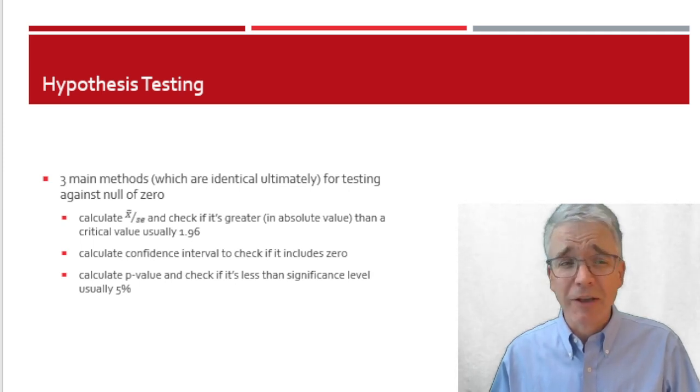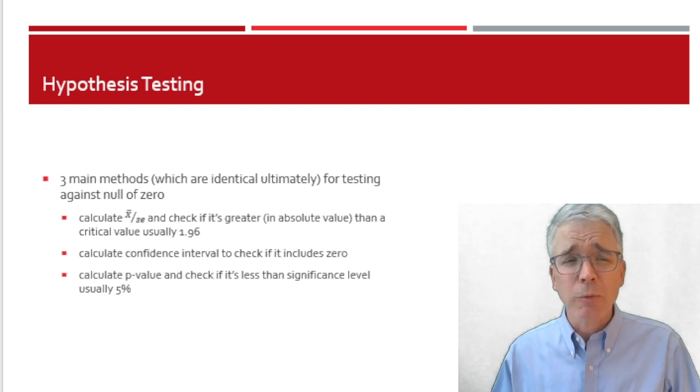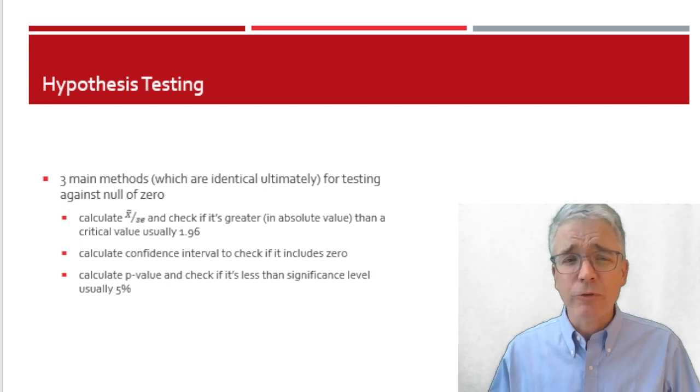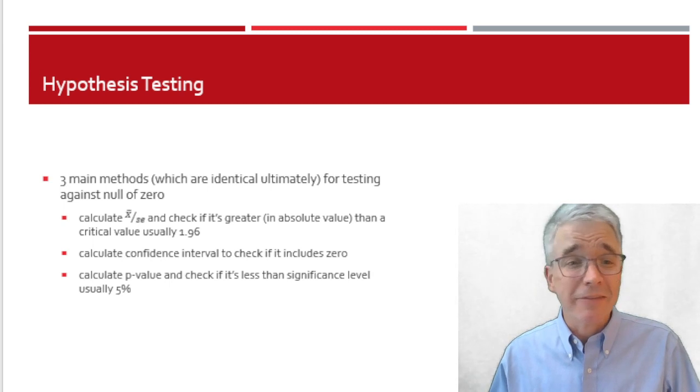Or I could calculate the p-value, which is the lowest possible probability that we reject the null hypothesis, and determine if that is less than my significance level of 5%. They're all getting to the same place. They're all doing the same thing, but it can be somewhat confusing because they all seem like they're very different approaches, but they're all getting the same outcome.